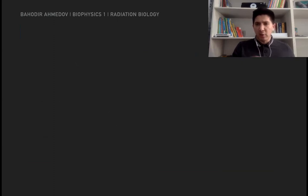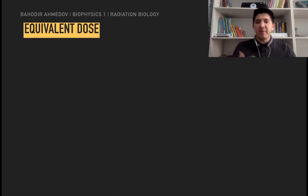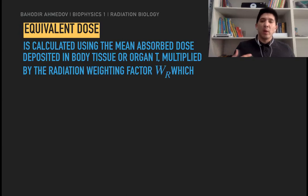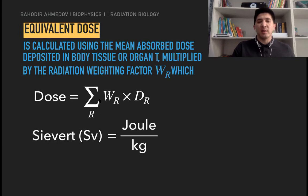Kerma, absorbed dose, and exposure are all physical measurements because we deal only with energy or charge per kilogram of mass. However, depending on the type of radiation, the biological effects on the human body may differ — alpha radiation is much more damaging than beta radiation. That's why we use the equivalent dose, which is calculated by multiplying the absorbed dose to the tissue by the radiation weighting factor W_R, depending on the radiation type.